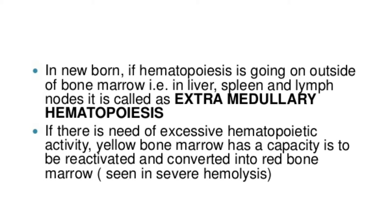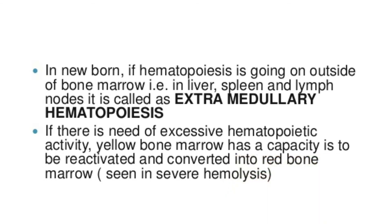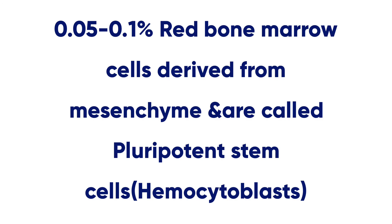The red bone marrow in the medullary cavity of long bones becomes inactive and is replaced by yellow bone marrow, which is largely fat cells. If there is a need for excessive hematopoietic activity, such as in the case of severe bleeding, the yellow bone marrow has a capacity to be reactivated and converted into red bone marrow.